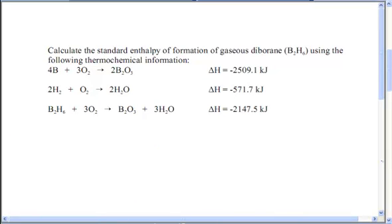Now it says calculate the standard enthalpy of formation of gaseous diborane B2H6 using the following thermochemical reaction information. So remember, enthalpy of formation means elements combined together to form a compound. So my overall reaction is going to be elements combined together to form a compound. Now, obviously, I need to balance this 2B, 3H2, and then B2H6. And they want me to find the delta H for this overall reaction.